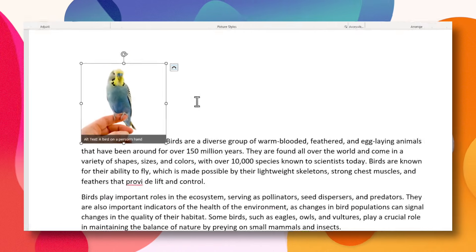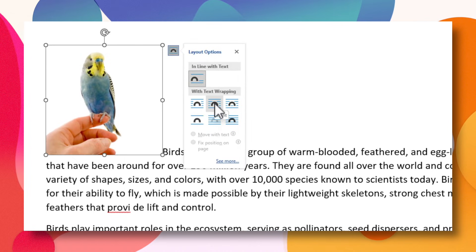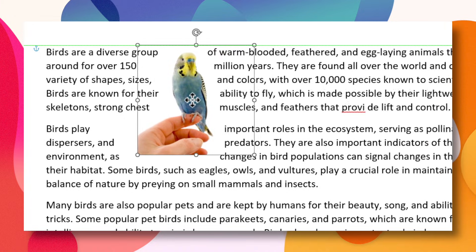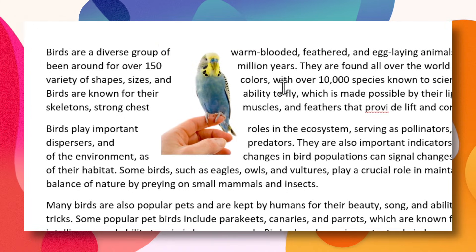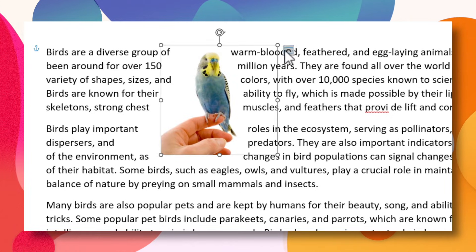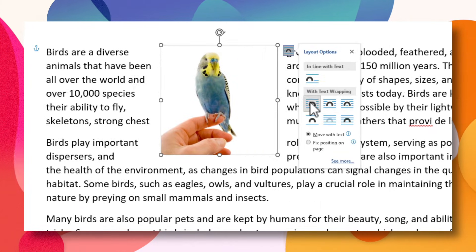Now if I were to go to the layout option and choose tight, as I move around the paragraph, you can see that the text is actually wrapping tightly around the image now. And if you were to compare this to the square option, you can see the clear difference.